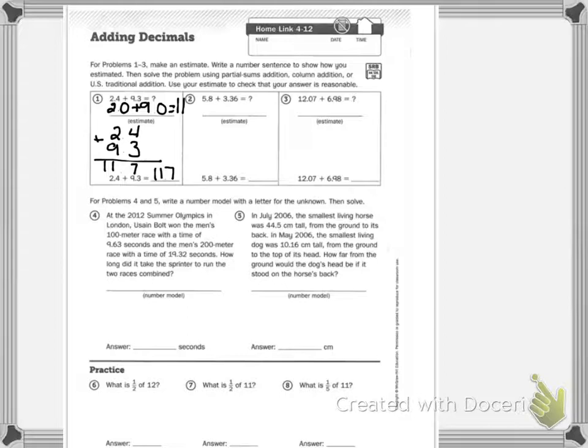Now do 2 and 3 on your own. 4 and 5 say write a number model with a letter for the unknown, then solve. At the 2012 Summer Olympics in London, Usain Bolt won the men's 100 meter race with a time of 9.63 seconds, and the men's 200 meter race at a time of 19.32 seconds. How long did it take the sprinter to run the two races combined?